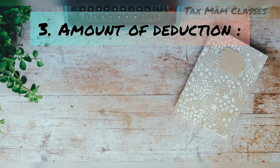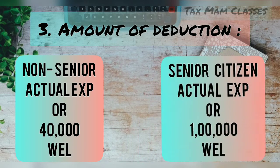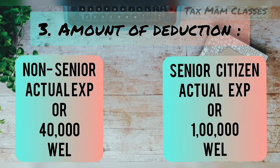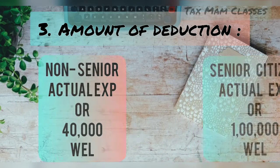Coming to the amount of deduction: if the person taking treatment is a non-senior citizen, then the actual expenditure met or ₹40,000, whichever is less, is allowed as deduction. For a senior citizen, the actual amount met or ₹1,00,000, whichever is less, will be allowed as deduction. These amounts are for Assessment Year 2020–2021.